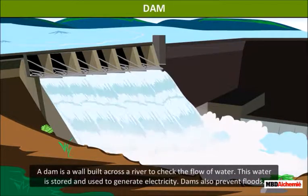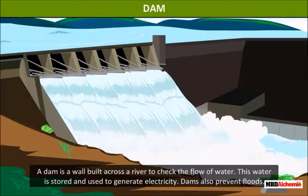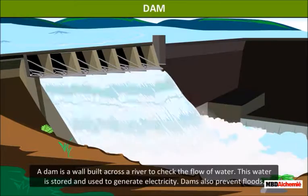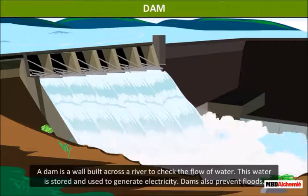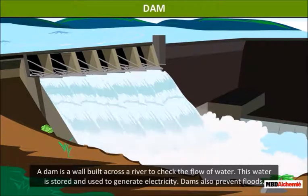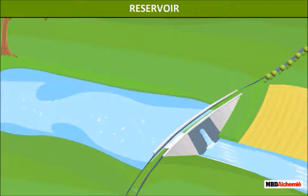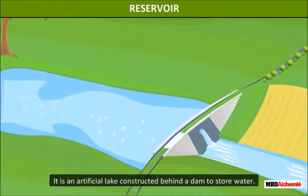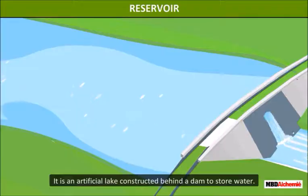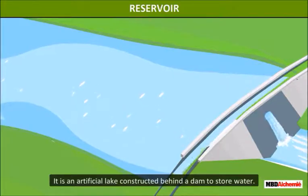A dam is a wall built across a river to check the flow of water. This water is stored and used to generate electricity. Dams also prevent floods. A reservoir is an artificial lake constructed behind a dam to store water.